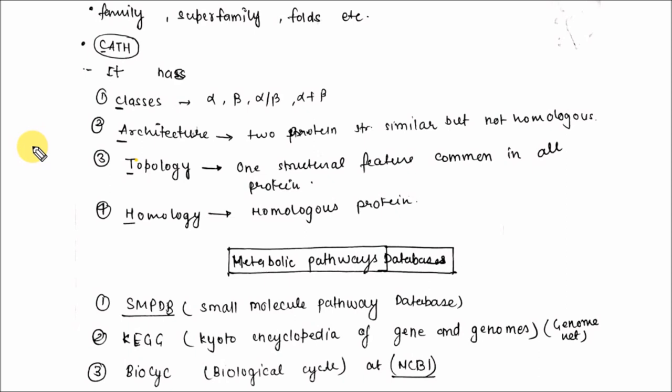CATH (Class Architecture Topology Homology) has first classes: alpha, beta, alpha or beta, or alpha and beta. The second is architecture, which represents two protein structures similar but not homologous. The third is topology, which represents one structural feature common in all proteins. The fourth is homology, meaning homologous proteins that share a common ancestor.